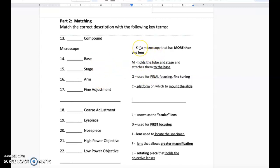Letter K: a microscope that has more than one lens. M: holds the tube and stage and attaches them to the base. G: used for final focusing, fine tuning. Letter C: the platform on which to mount the slide.